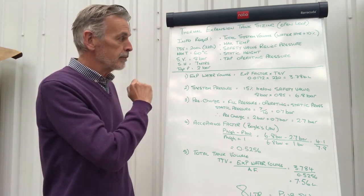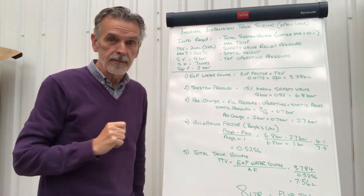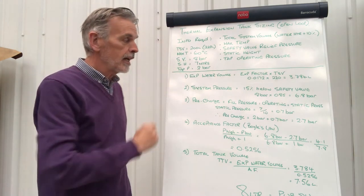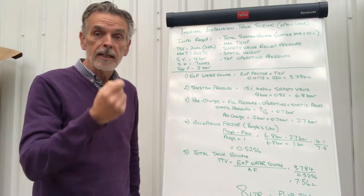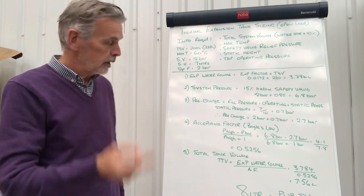The safety valve is set at 8 bar. The static height is 7 metres, and we have a tap operating pressure required at that point of 7 metres at 2 bar.